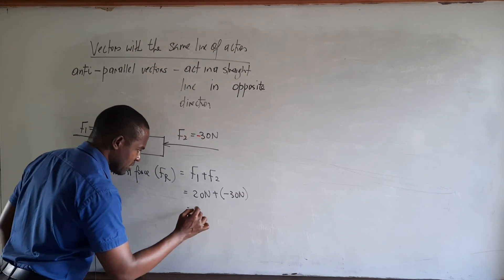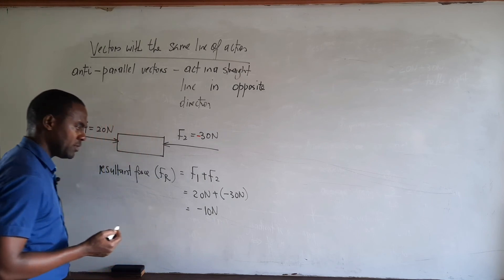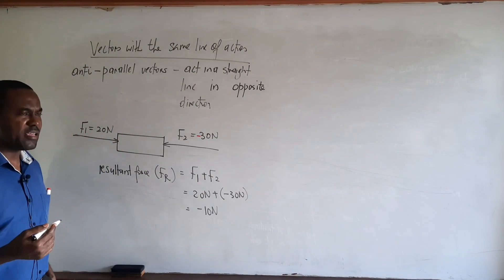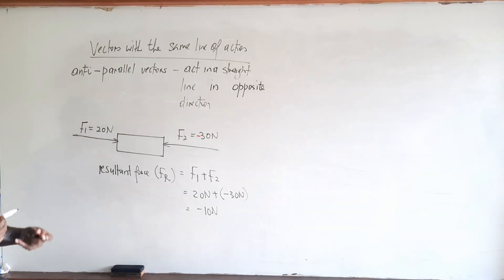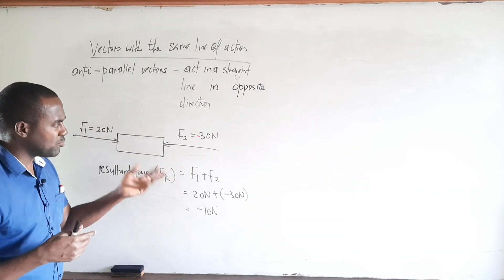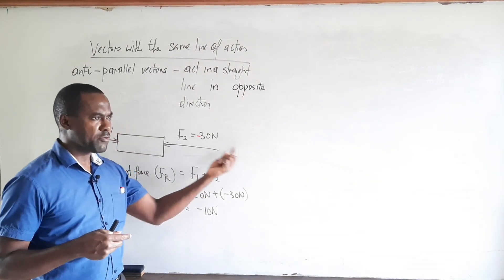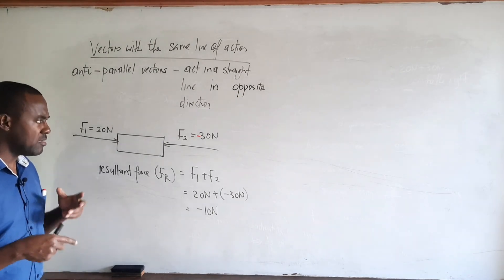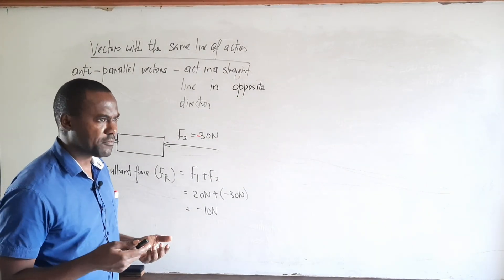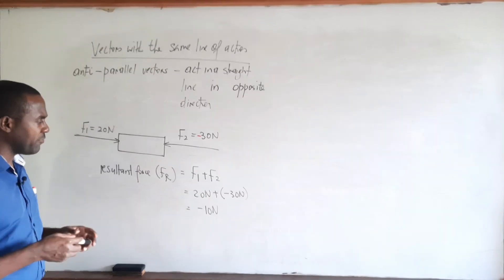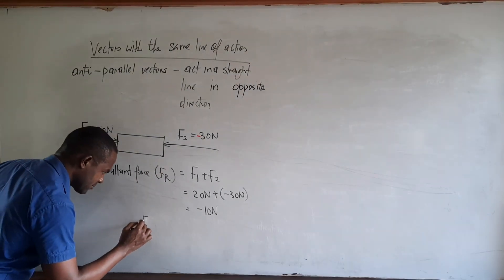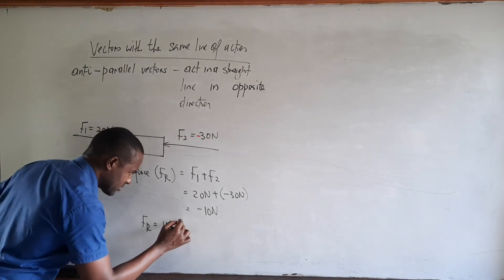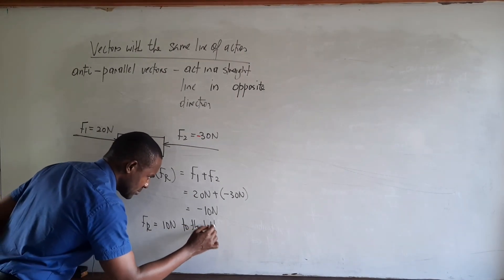The result is minus 10 newtons. The minus sign indicates the direction — since we treated right-to-left as negative, the resultant is acting in that direction. So we state the resultant force as a magnitude of 10 newtons acting to the left.